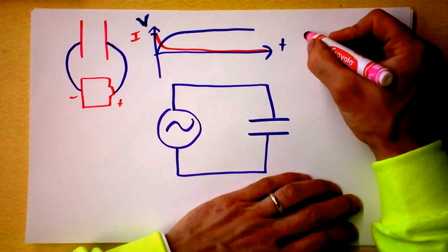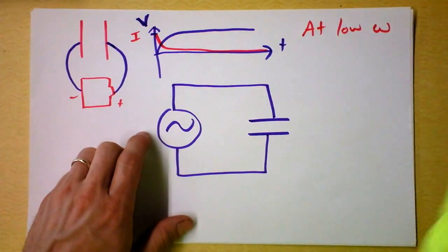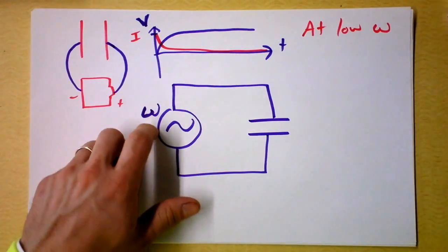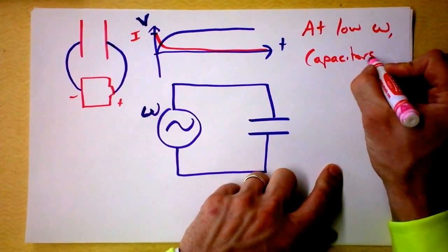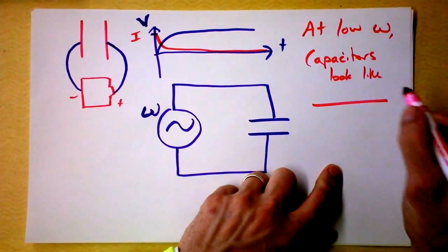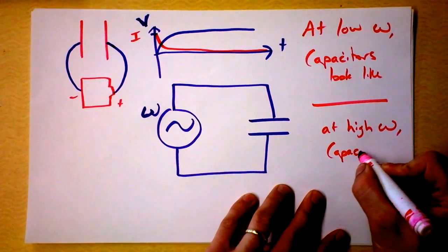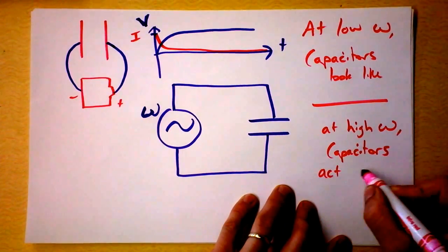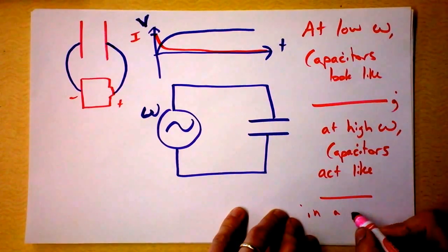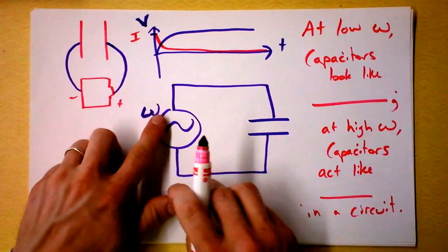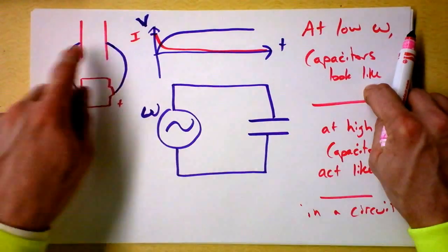Let me summarize that observation. I'll use omega to symbolize how fast the current is sloshing — this is the angular frequency of my AC power source. At low omega, capacitors look like a break in the circuit. In a DC circuit, a capacitor looks like a break, and so at low omega that's what capacitors look like — it's as if the circuit is broken.